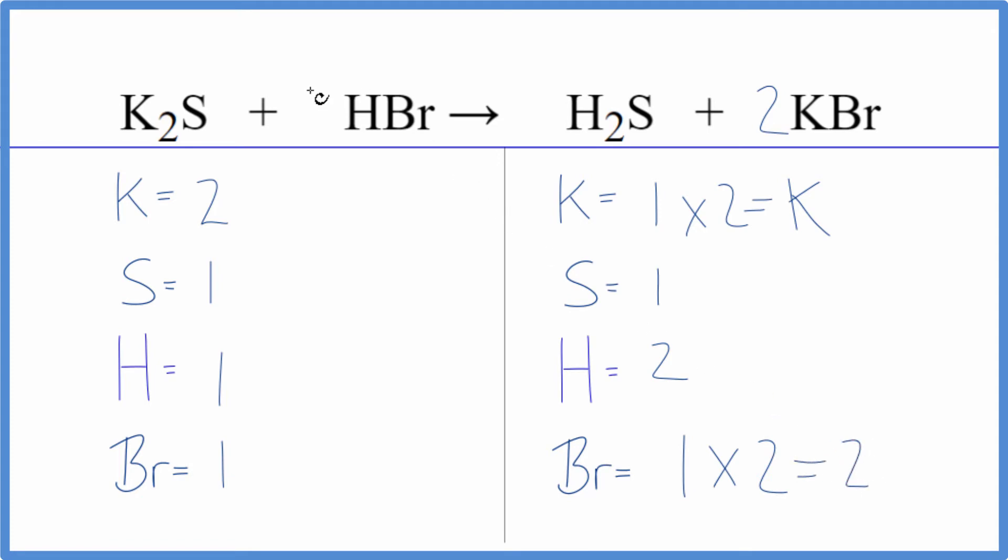We might as well put a two in front of the HBr. So again, the two goes to everything here. One bromine times two. Those are balanced. And then one hydrogen times two. That's balanced. And we're done. This equation is balanced.